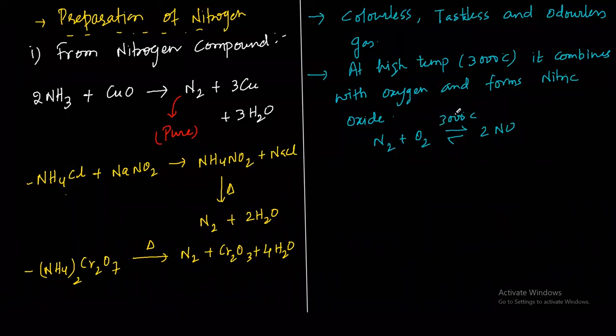Nitrogen combines with hydrogen: N2 plus 3H2, using iron catalyst at 400-500°C. The process is known as Haber's process, and the product is NH3 ammonia.